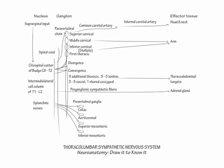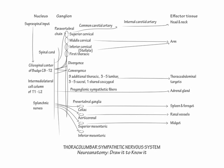Indicate the celiac ganglion innervates the spleen and foregut derivatives, the aorticorenal ganglion innervates the renal vessels, the superior mesenteric ganglion innervates the midgut derivatives, and the inferior mesenteric ganglion innervates the hindgut derivatives, urinary and reproductive organs.